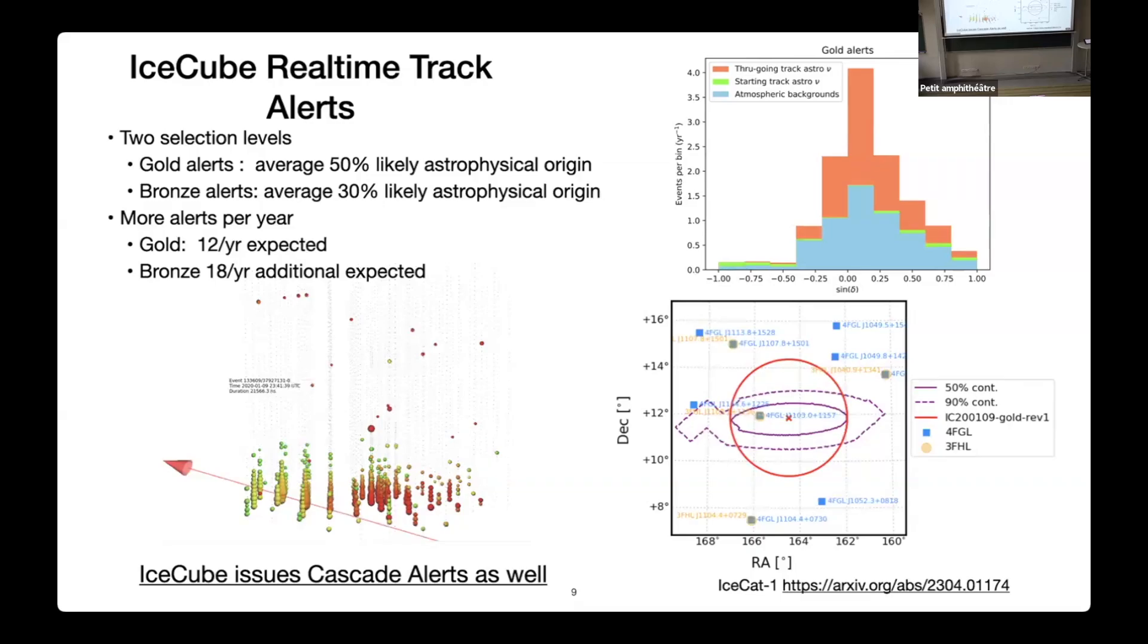We expect roughly 12 of the gold events per year and an additional 18 in the bronze. This is what a typical one might look like. You see it going through a large part of the instrumented volume. We're able initially online to send you an error circle from our quick reconstruction online. And then we do a detailed follow-up reconstruction and generate these error contours. You can see they're really dominated around the best fit.